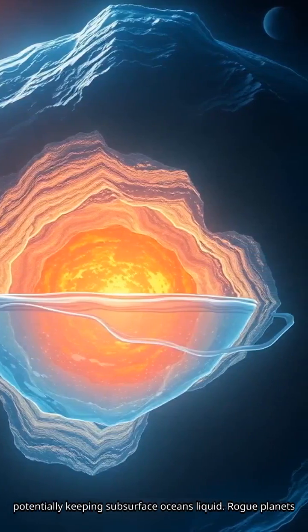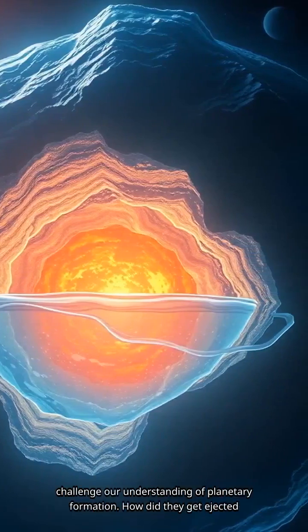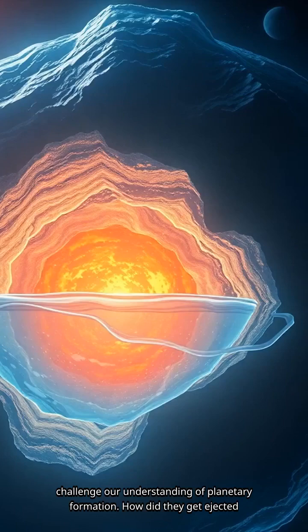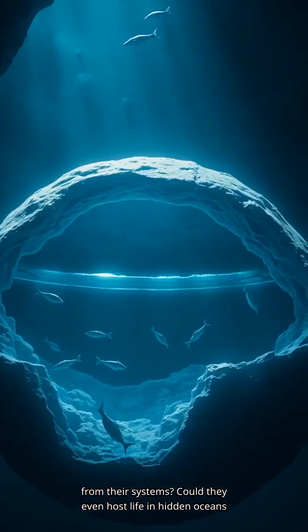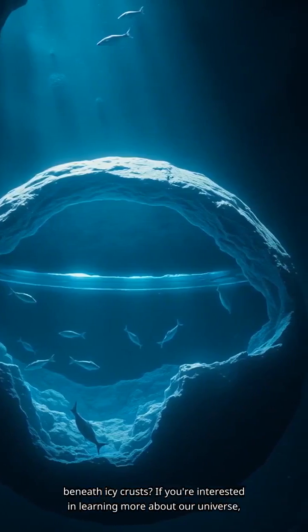Rogue planets challenge our understanding of planetary formation. How did they get ejected from their systems? Could they even host life in hidden oceans beneath icy crusts?